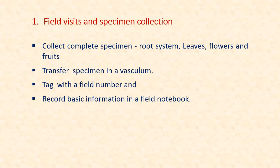During field visits and specimen collection, collect complete specimens with all parts — root system, leaves, flowers, fruits, etc. Transfer the specimen in a vasculum to prevent wilting. Tag the specimen with a field number and record the basic information in the field notebook, such as locality, altitude, habit, floral characters, date and time of collection, name of the collector, common name, scientific name, etc.